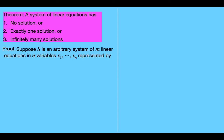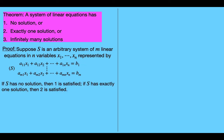Suppose that s is an arbitrary system of m linear equations in n variables x sub 1 to x sub n, represented by these m linear equations. If s has no solution, then case one is satisfied. If s has exactly one solution, then case two is satisfied.